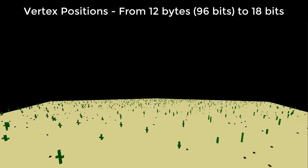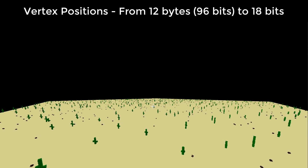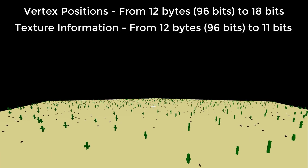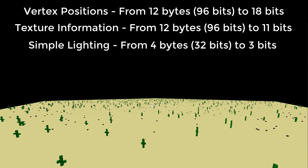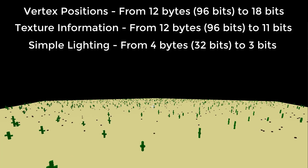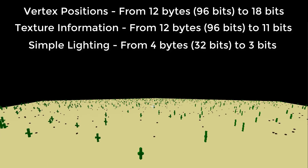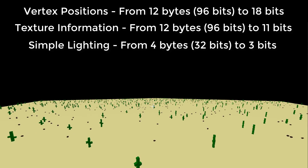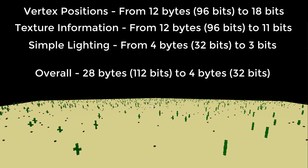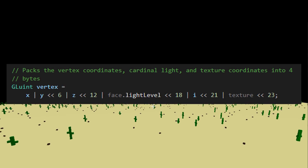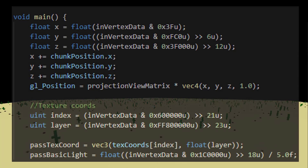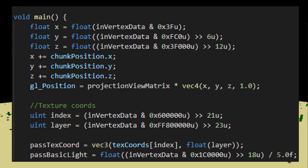To sum this all up: vertex positions have gone from 12 bytes to just 18 bits; texture information has gone from 12 bytes to 11 bits; and lighting information has decreased from 4 bytes to just 3 bits. Overall, the information stored per vertex has decreased from 28 bytes to just 4 bytes, allowing all this data to be packed into a single 4-byte number before being sent to the shader where it will be unpacked and processed.